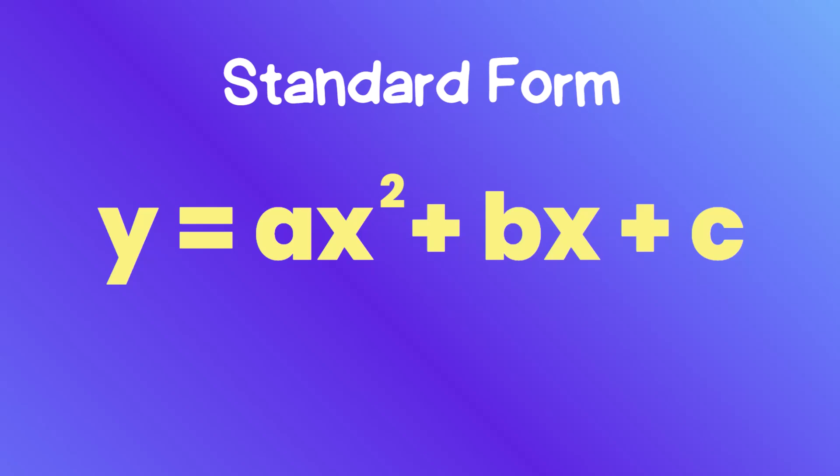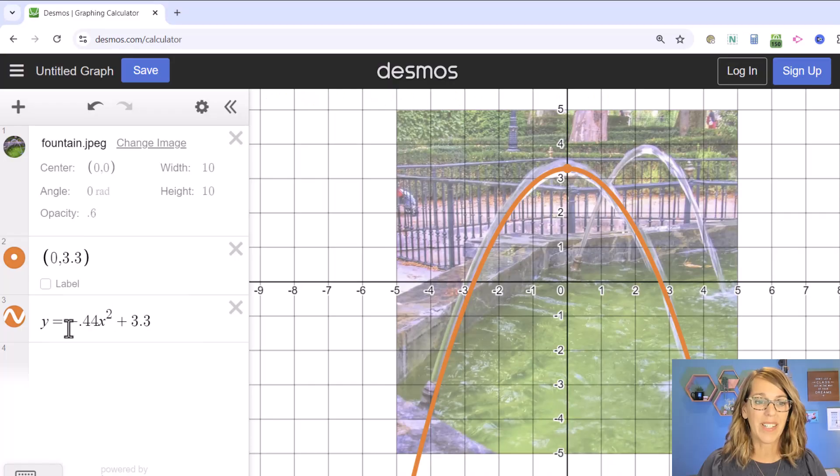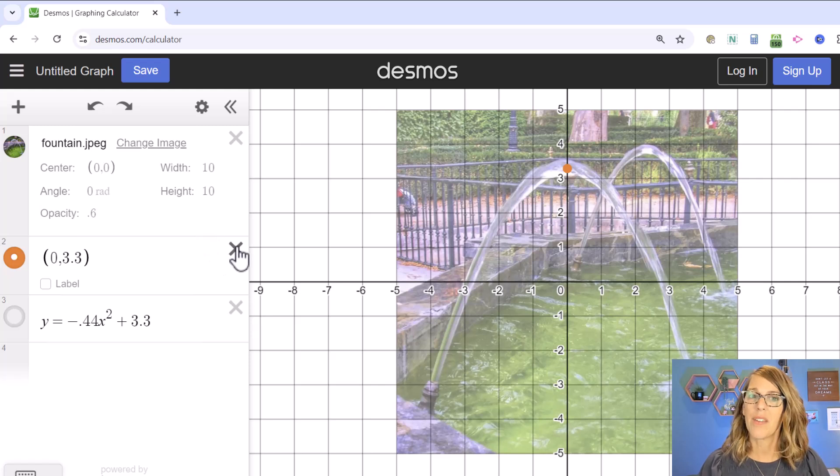That was the first way, but I want to show you another way that is so incredibly nice using sliders. And you can do this with either the vertex form or the standard form. I'm going to leave this parabola, but let's go ahead and hide it. And I'm going to get rid of that point that we had there for the vertex.